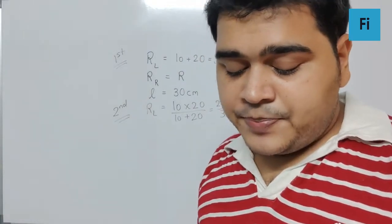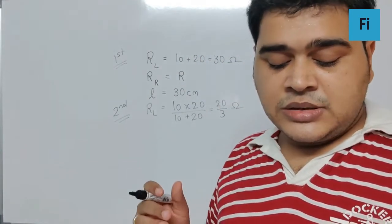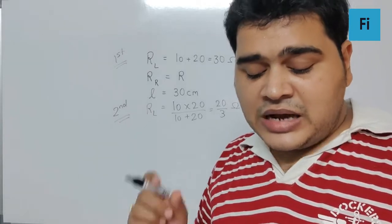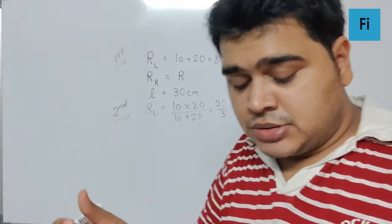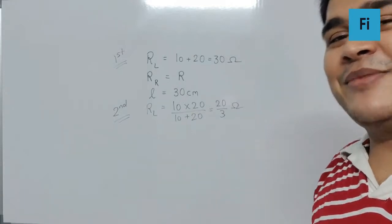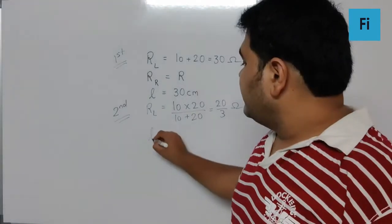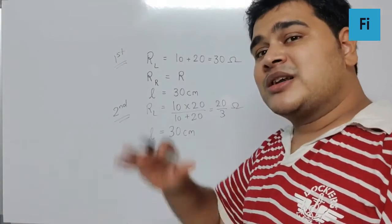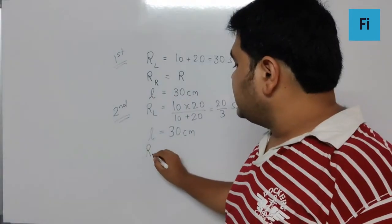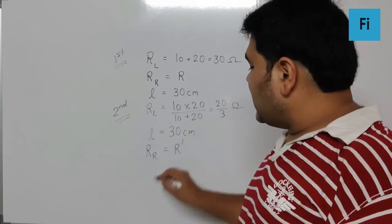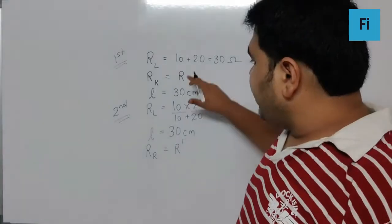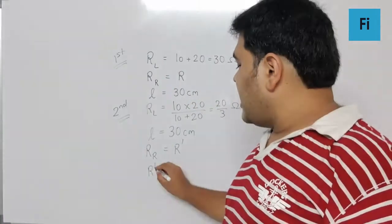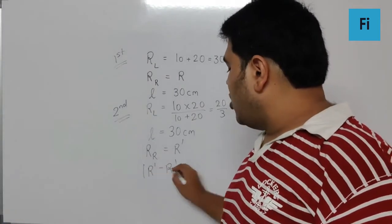Then they ask by how much R in the right gap should be changed to get the same null point. That means we want L to be 30 centimeters, for which the right gap will have some R prime. We need to find the change, which is the magnitude of R prime minus R.